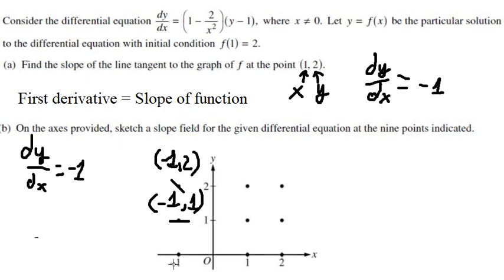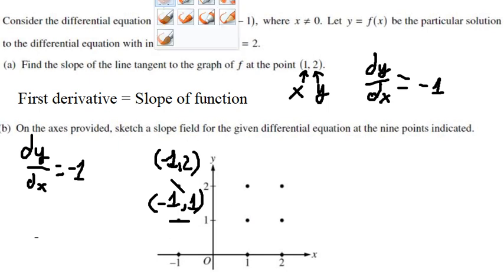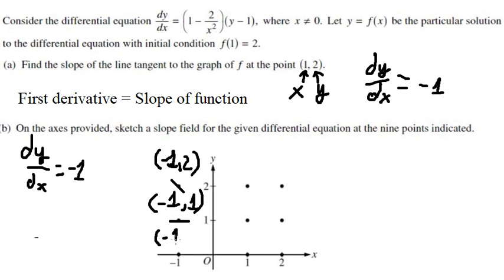Now let's go to the next point, which is negative 1 and 0. We put that value here and we have positive 1, so the line will go like this.